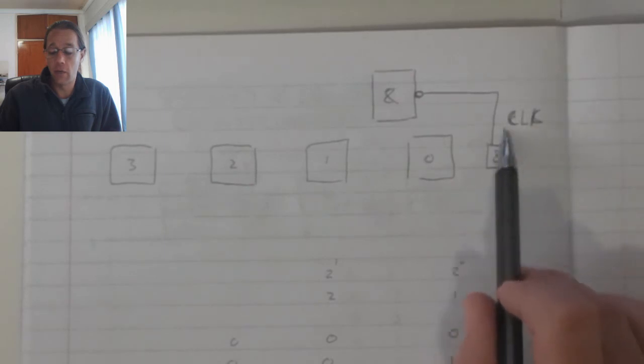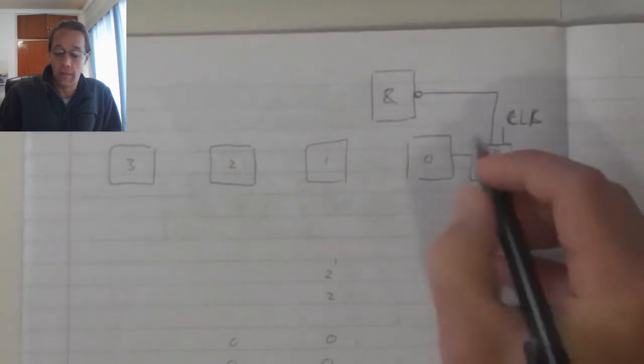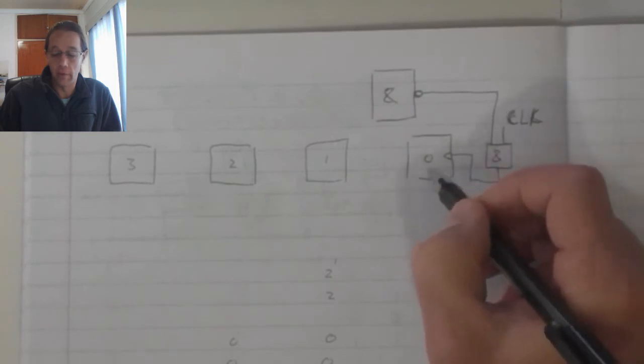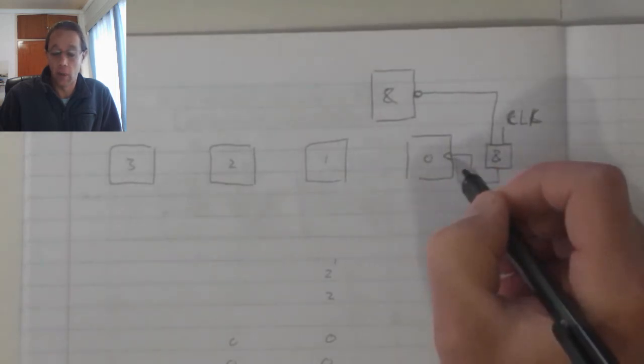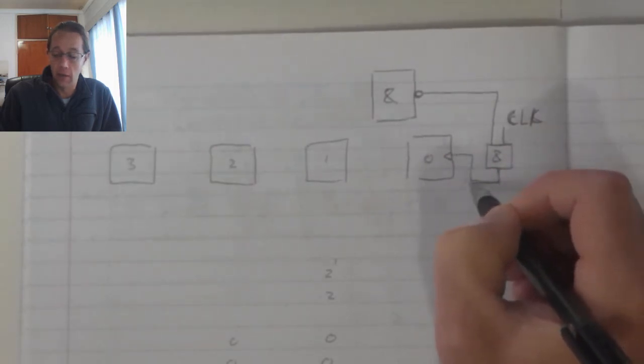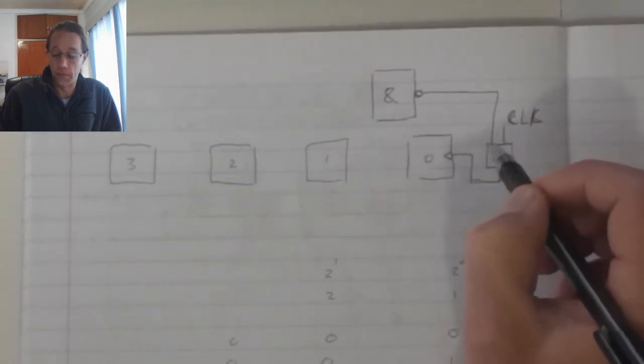And then every time a clock pulse enters, a 1 will be sent from there into the clock pulse, or the clock input of my flip-flop. Whether it's synchronous or asynchronous is irrespective, but that AND needs to feed into the clock input.